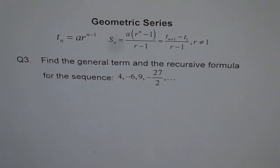Question number 3. Find the general term and the recursive formula for the sequence 4, minus 6, 9, minus 27 over 2 and so on.